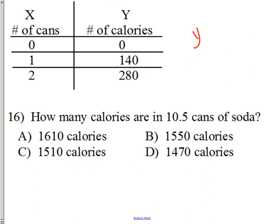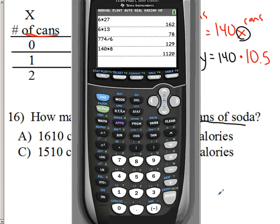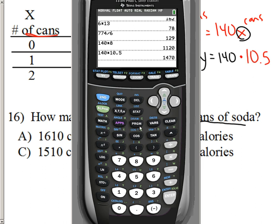Same thing right here. Y equals 140X. X is cans. Y is calories. So, I'll just put cals there. They want to know how many calories in 10 and a half cans of soda. So, we just take out this 10 and a half and replace it for X cans. And, since they're sitting side by side, we'll just go ahead and multiply them. 1,470 calories.